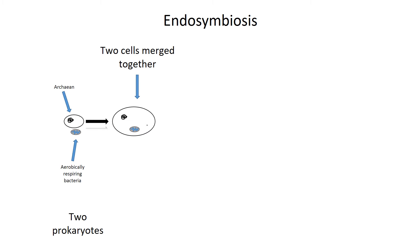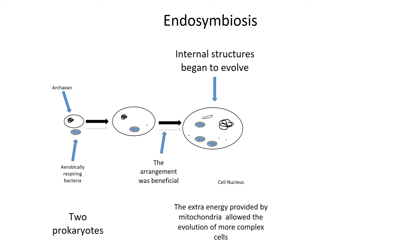Over time, the nature of their relationship changed and became more mutualistic. Instead of one being a parasite drawing resources from the other, the relationship became mutually beneficial. The larger cell provided nutrients to the smaller cell; the smaller cell, capable of aerobic respiration, provided copious amounts of energy to both of them. Because the arrangement was beneficial, the cells began to get larger and more complex as they evolved internal structures. These internal structures compartmentalized the functionings of the cell, and one of the first to evolve outside of the mitochondria was probably the cell nucleus. We can see the beginnings of the endomembrane system.